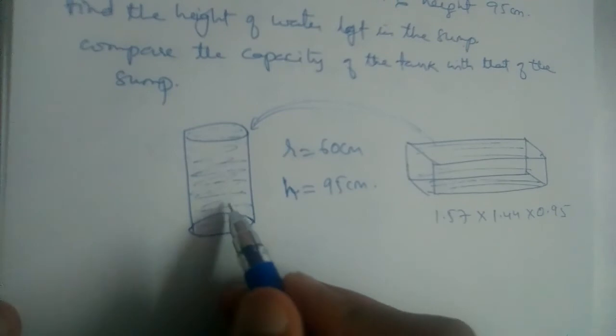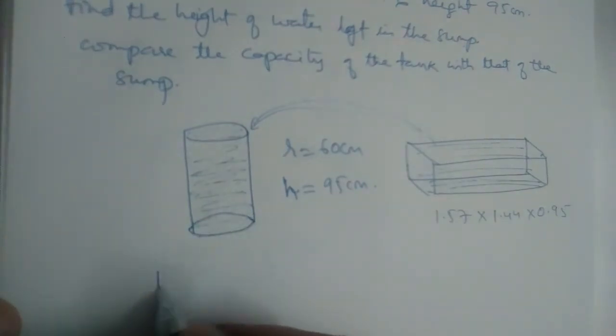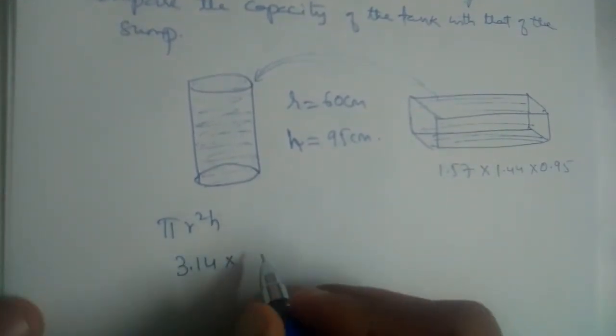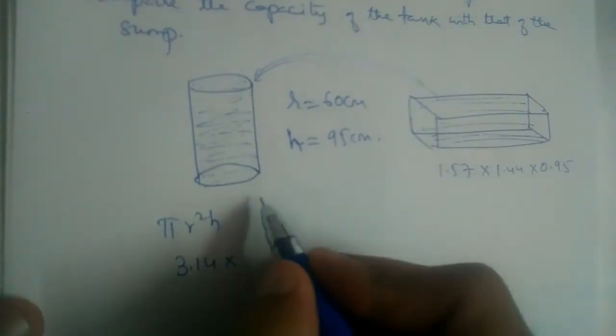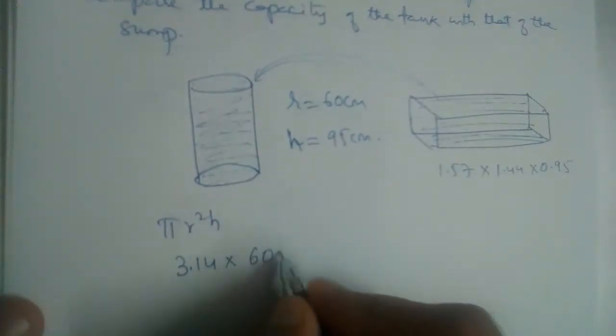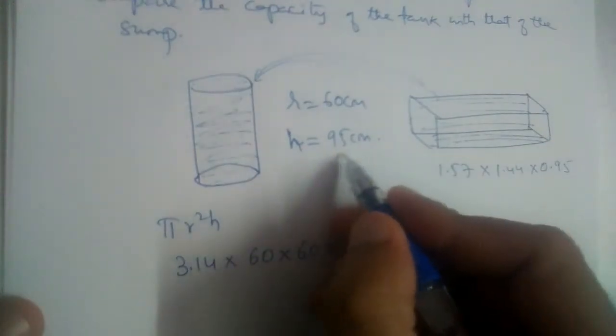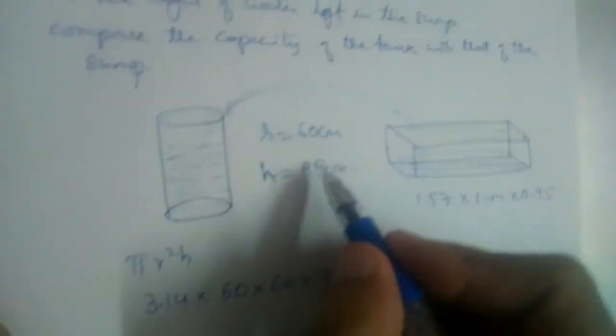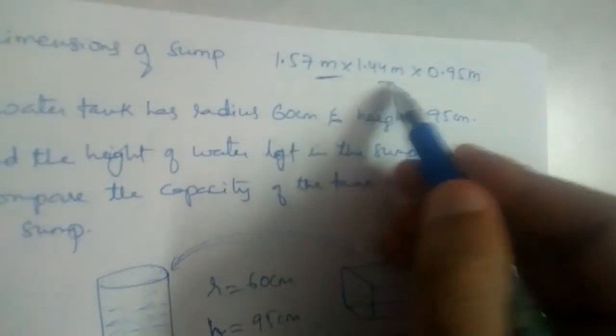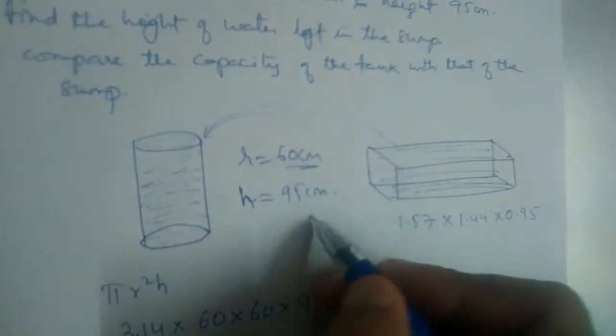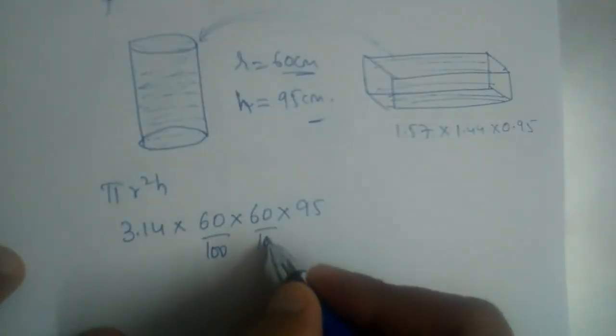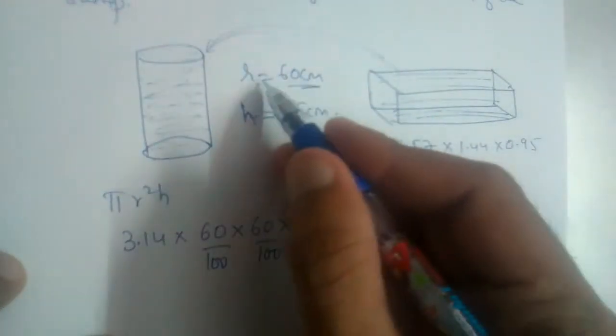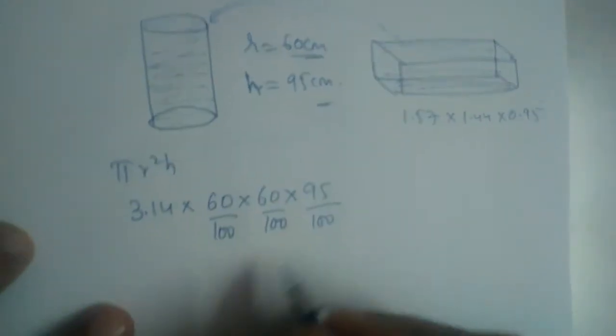We need to find the volume of this cylinder first. We know it is pi r square h. 3.14 into r. R is equal to 60, so 60 into 60 into h. H is 95. And one more thing here: these are in meters, these are in centimeters. So, let us divide by 100 first. 60 by 100 will give us r in meters, so 95 by 100 here.